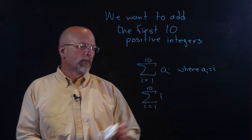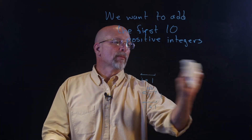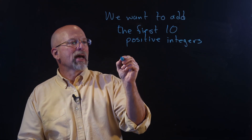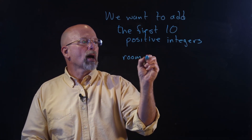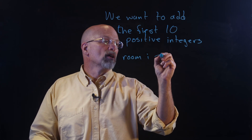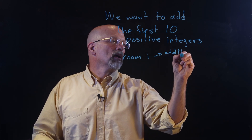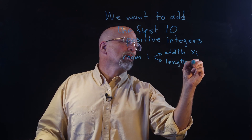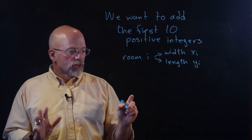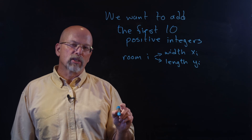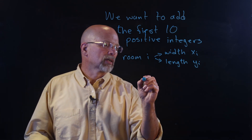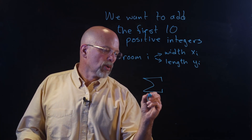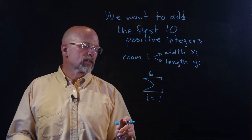Let's go back to our room example. Remember, I had room i. Room i had dimensions — the width was x sub i and the length was y sub i. So how would we represent this using this new notation? Well, it had six rooms, so we're going from i equals one up to six.